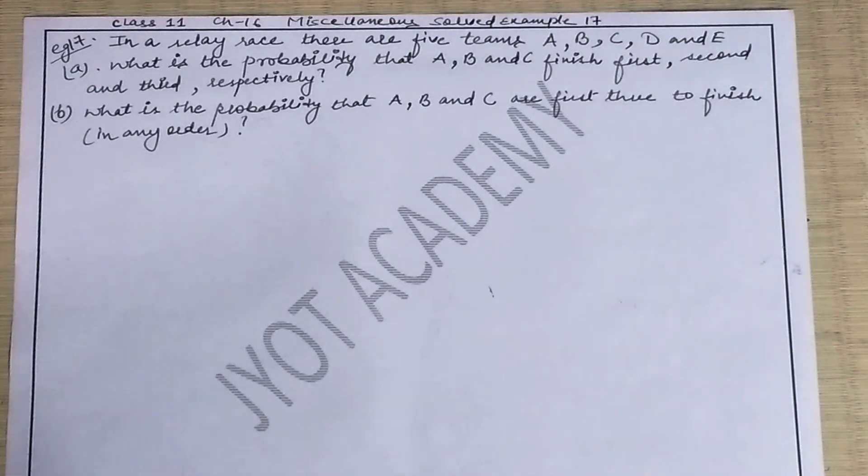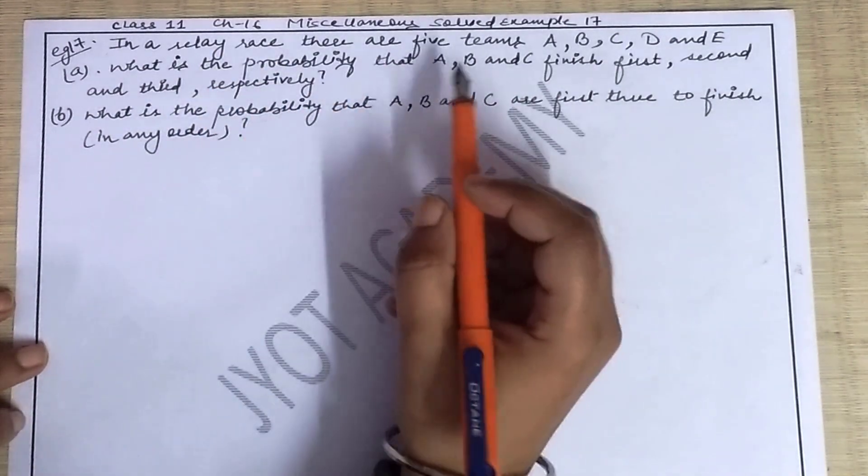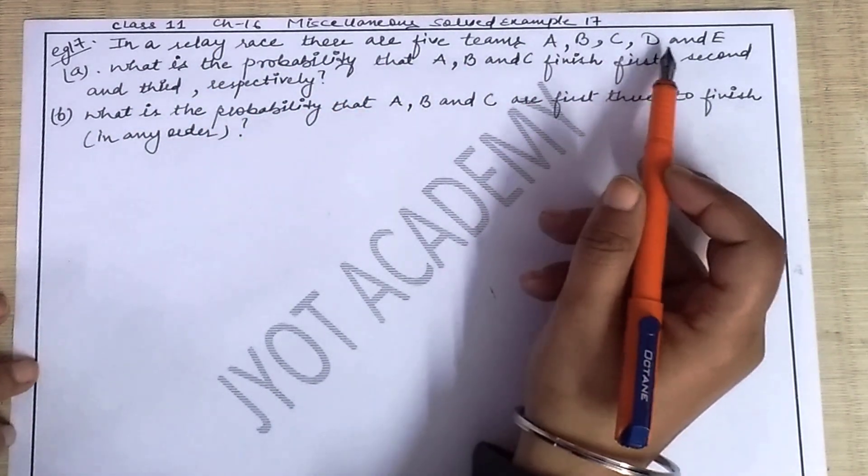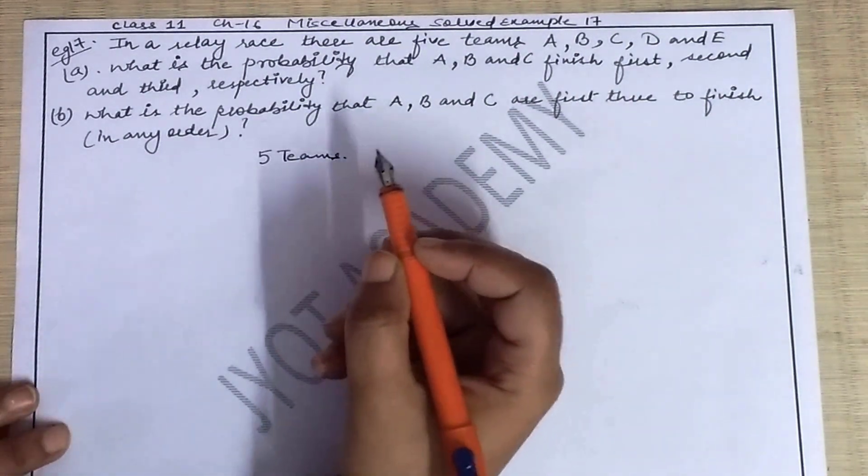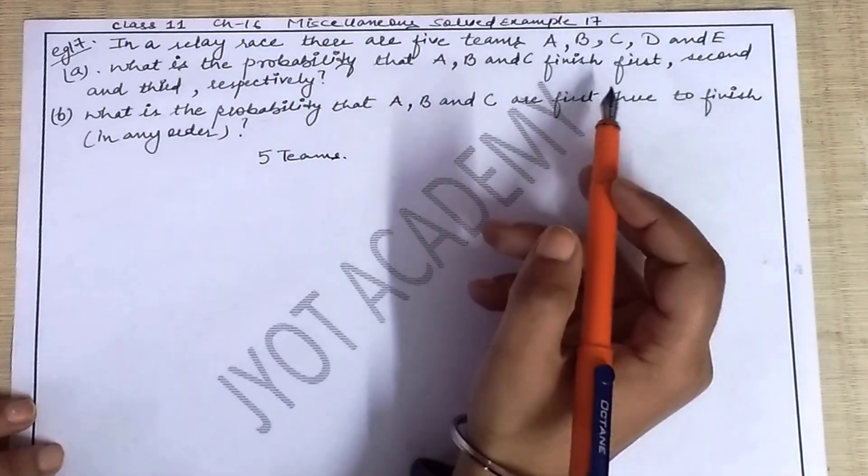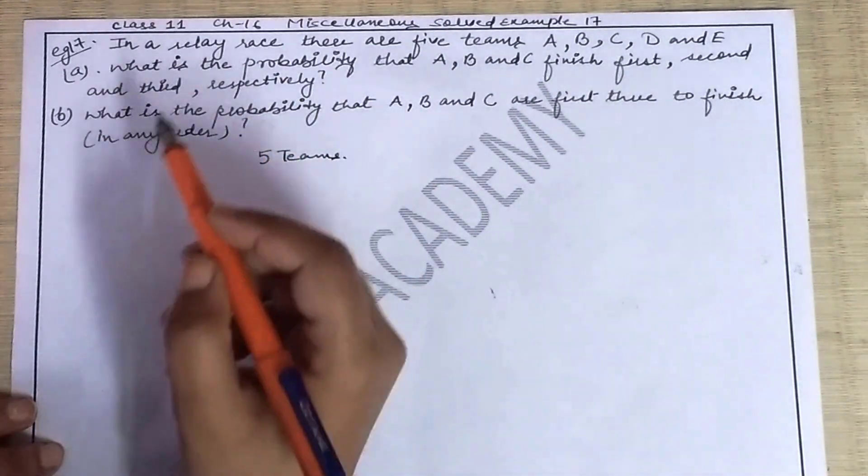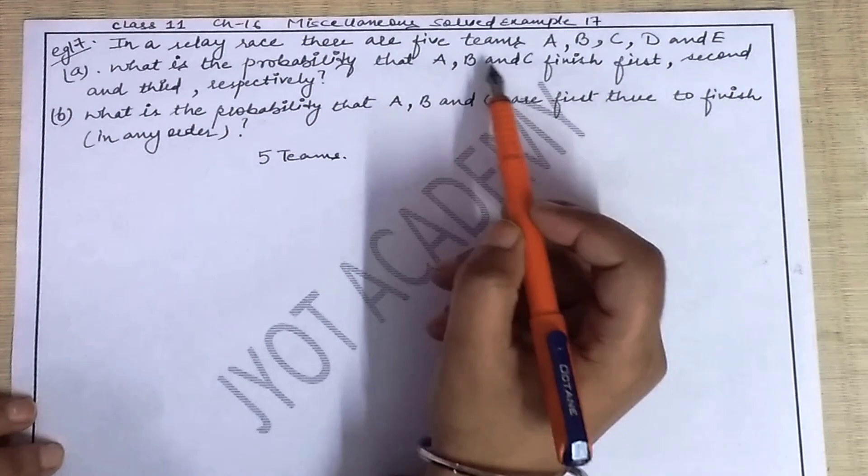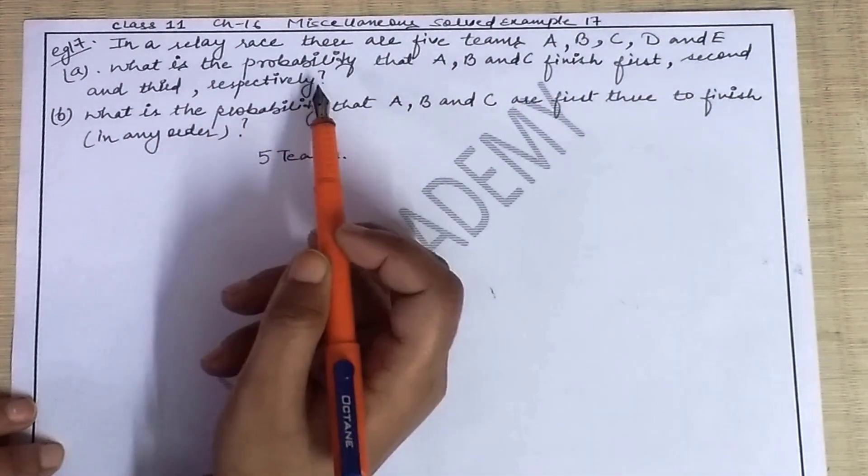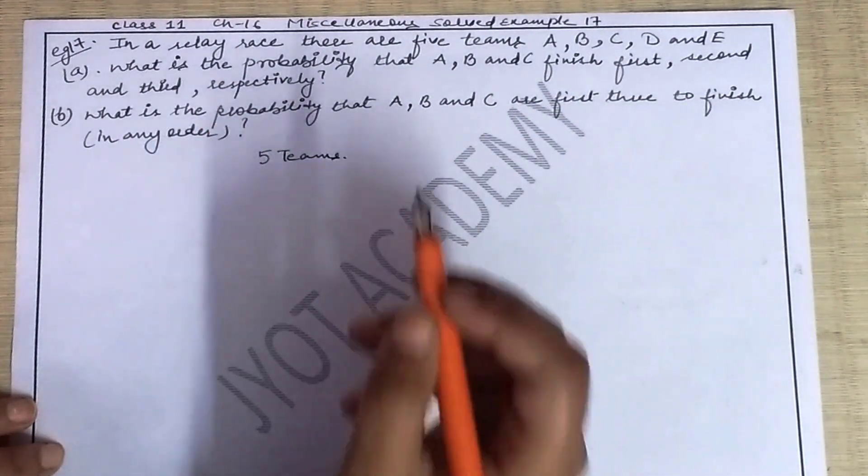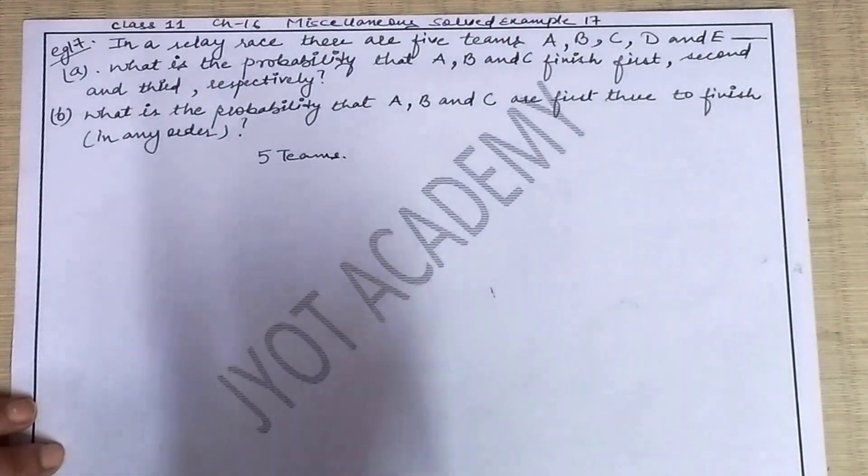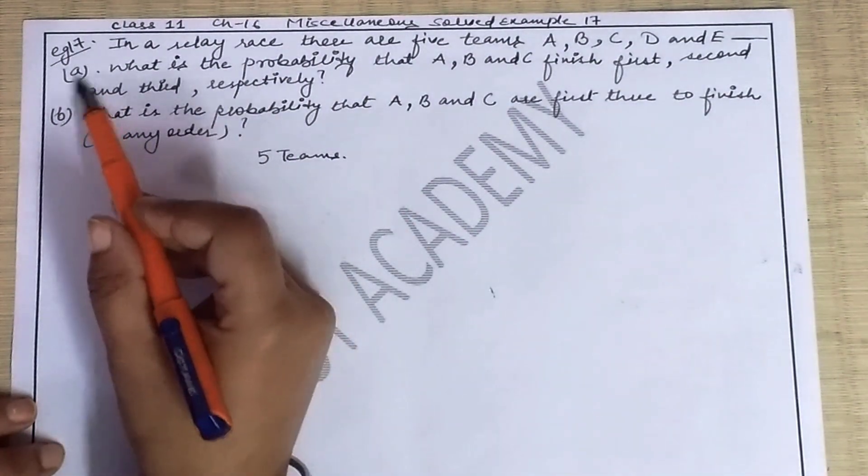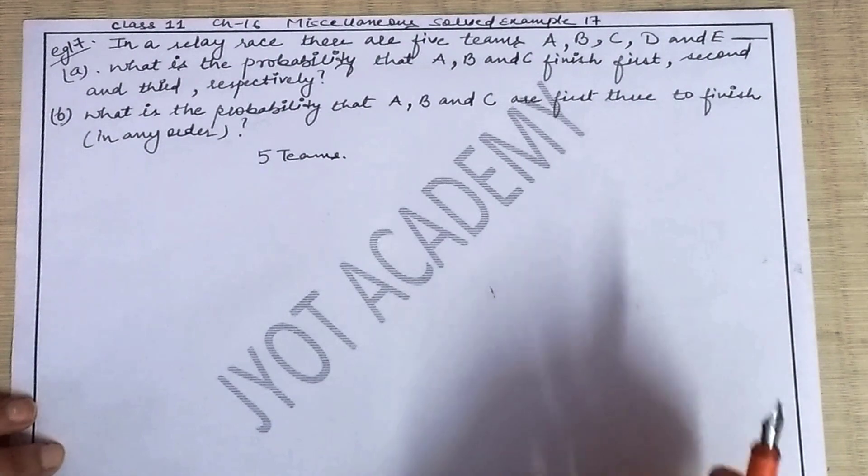Hello students, welcome back to Jyot Academy. Now let's see example number 17. In a relay race there are five teams A, B, C, D, and E. So we have five teams. If you read further in the question, you'll see only three positions are available. What is the probability that A, B, C finish first, second, and third respectively? The statement at the top doesn't clearly mention how many positions you have, but in the condition you can see that there are three positions.